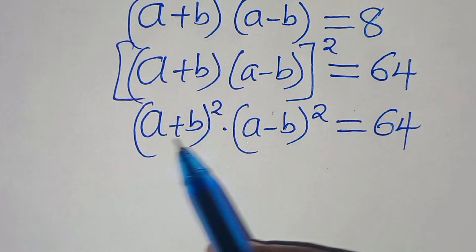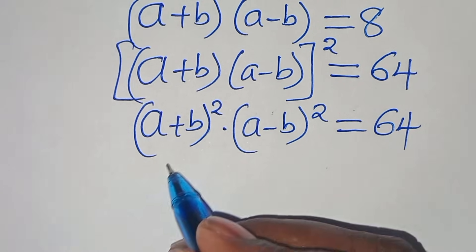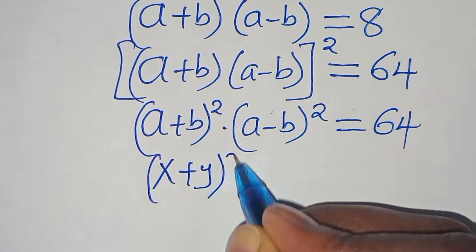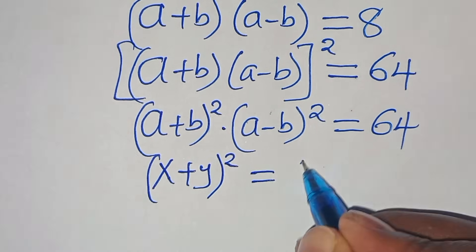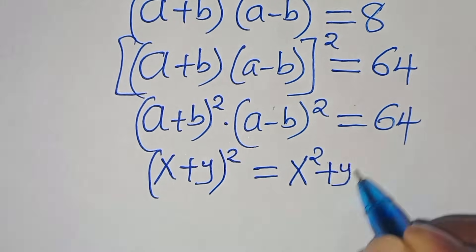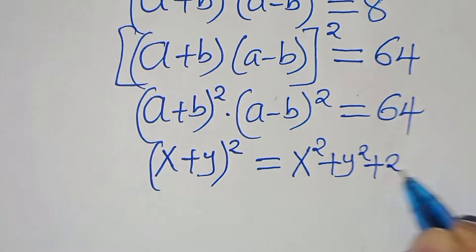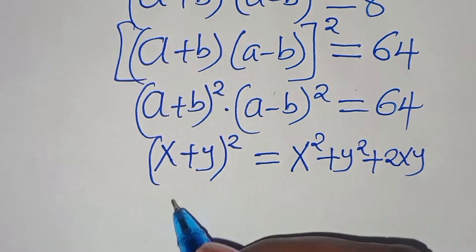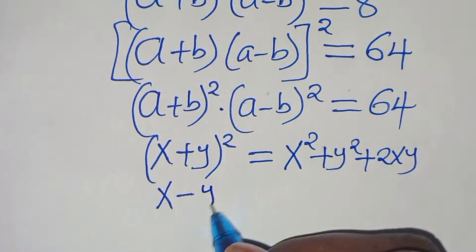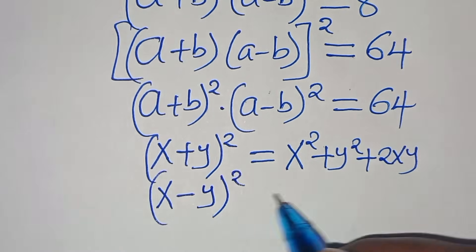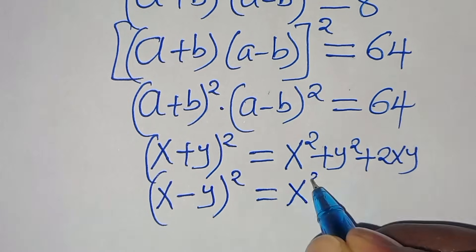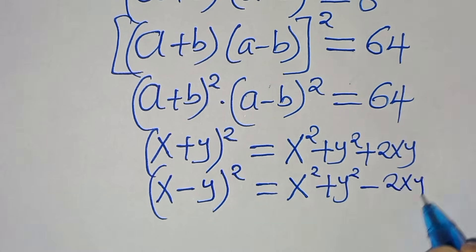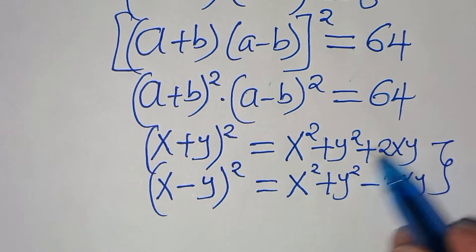Now, (a plus b) squared is in the form (x plus y) squared, which expands to x squared plus y squared plus 2xy. And (a minus b) squared is in the form (x minus y) squared, which expands to x squared plus y squared minus 2xy. Applying these two algebraic identities: